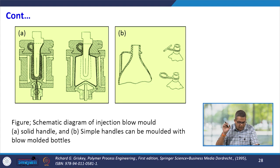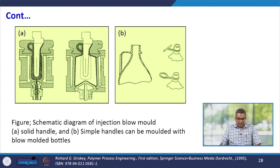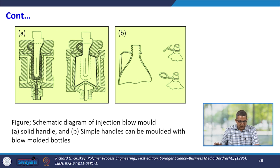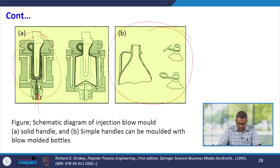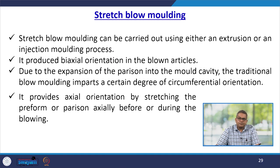When the blow moulds are opened, finished goods are rotated to an ejection station where they are mechanically stripped off. A schematic diagram shows the injection blow mould with a solid handle design. Simple handleless bottles as well as bottles with handles can be produced using injection blow moulding.